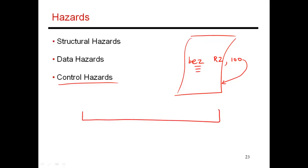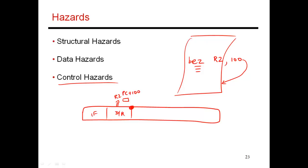To see how this translates into our pipeline: I have my instruction fetch stage, then my decode and register read stage. I made the aggressive assumption that the branch is completely evaluated by the end of the second stage. In the decode and register read stage, I read the value of R2, use a small logic unit to check if it's equal to 0, and another to compute PC plus 100. By the end of the second stage, everything is done — I know if I need to jump to PC plus 100, and accordingly, in the next cycle I will fetch PC plus 100.